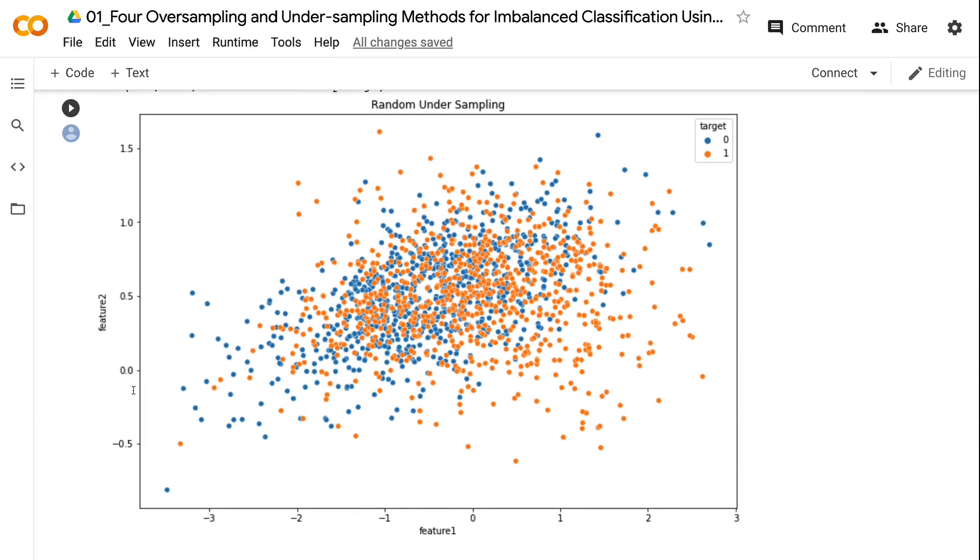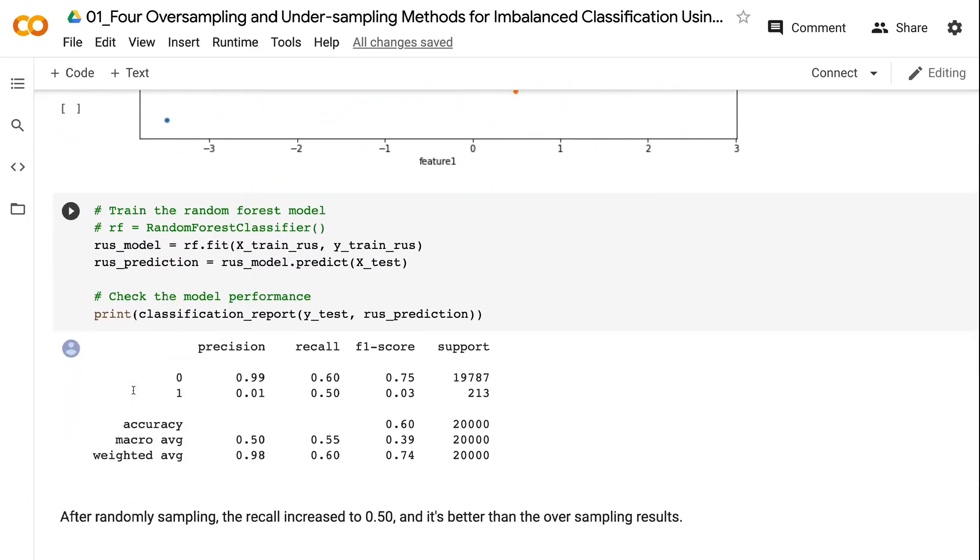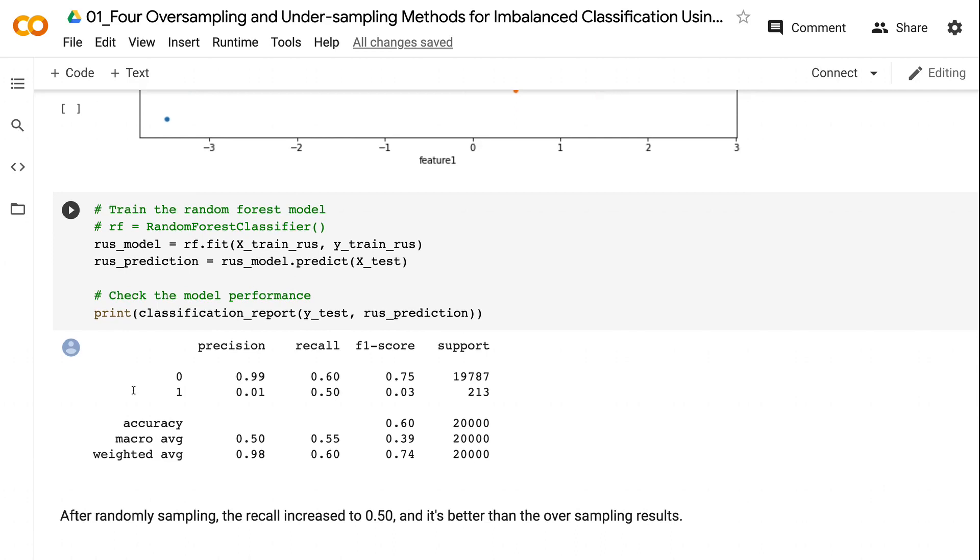After randomly sampling, the recall increased to 0.50, and it's much better than the oversampling results.